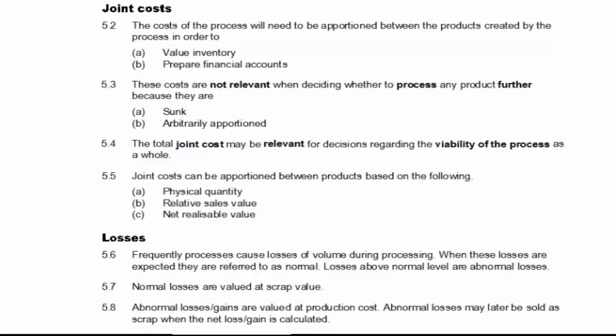Now in order to value inventory and to prepare financial accounts, we need to cost out products A, B, and C. And that means that we're going to have to apportion the joint costs between the products in some way. Now you can see in paragraph 5.5, we've got a number of ways in which we might actually apportion them. We might use physical quantity, so units that we produce or maybe weight or maybe volume.